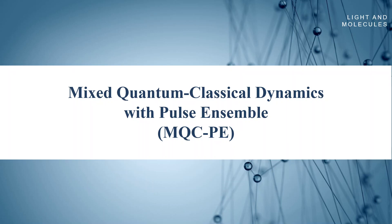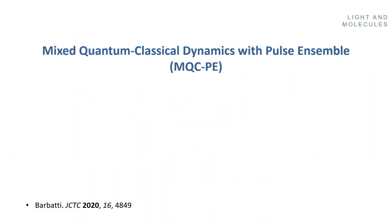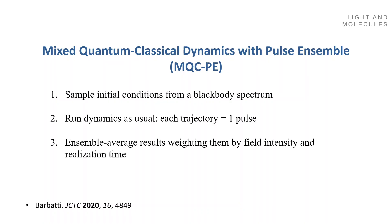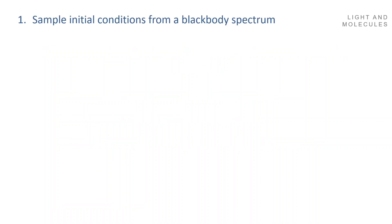Now that you have an idea how to simulate the thermal light using pulses, let me tell you how can you do dynamics using this approach. That's the mixed quantum classical dynamics with pulse ensemble. What do you do here? First, sample initial conditions from black body spectrum. Two, run dynamics as usual. And three, make the ensemble average weighting their trajectories by the field intensity and realization time. Let's go through each one of these topics. First, sample initial conditions from black body.